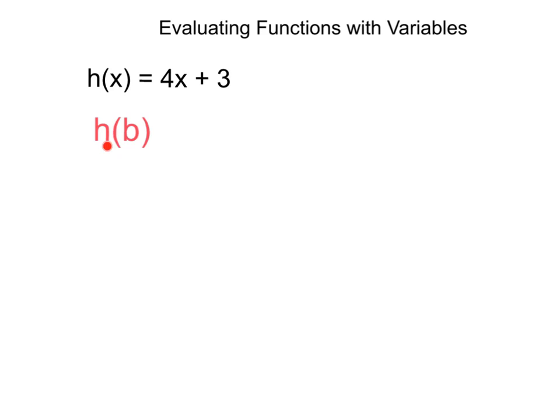If we want to find h(b), all that means is we're taking this b and plugging it in for our x value. That would give us h(b) = 4 times b, plugging in that b for the x,